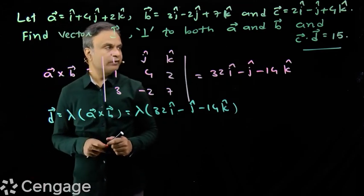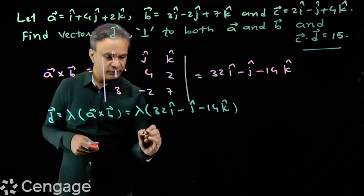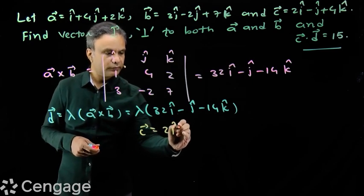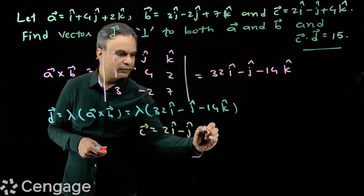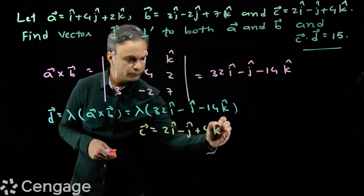What will be c dot d? Vector c is given. Let me write here, vector c is 2i minus j plus 4k.